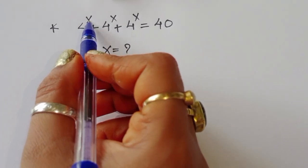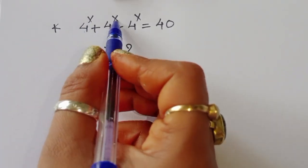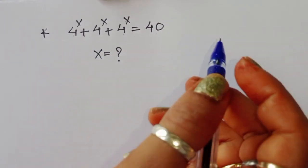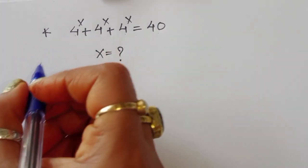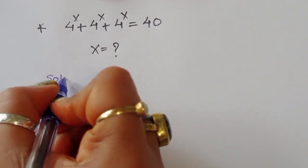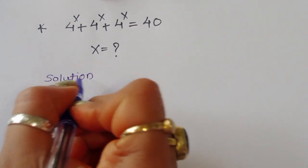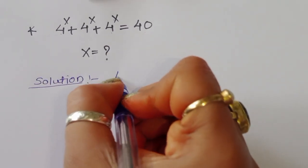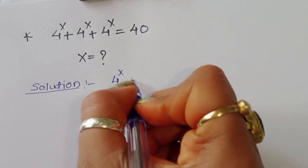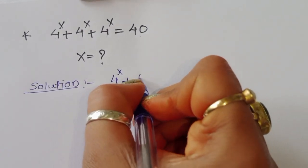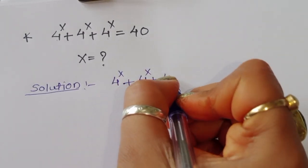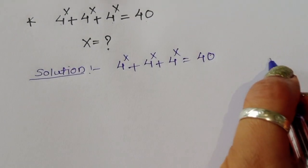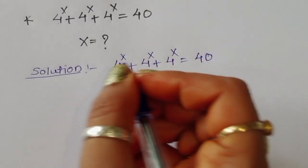Given 4^x + 4^x + 4^x = 40, we have to find the value of x. Let's see the solution. We start with 4^x + 4^x + 4^x = 40.